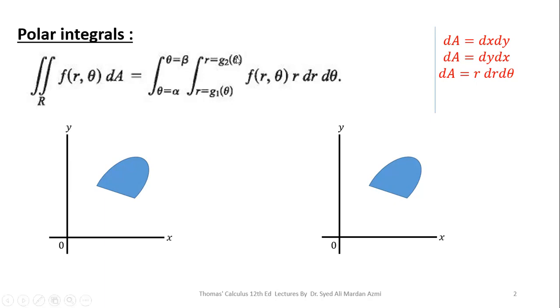These are the limits of R and these are the limits of theta. In the next step I will explain how I have calculated the limits. R is our inner variable, so limits of R may be constant or may be variable, but limits of theta are always in the form of constant numbers.